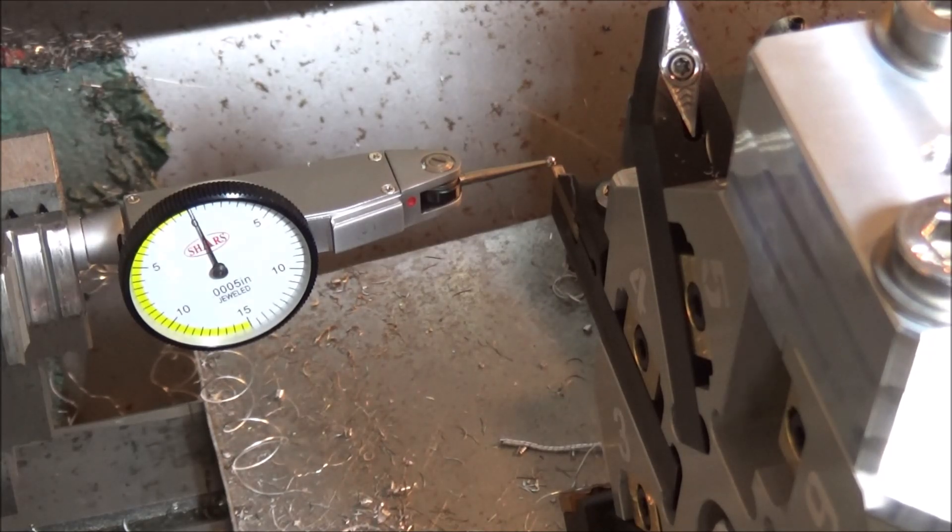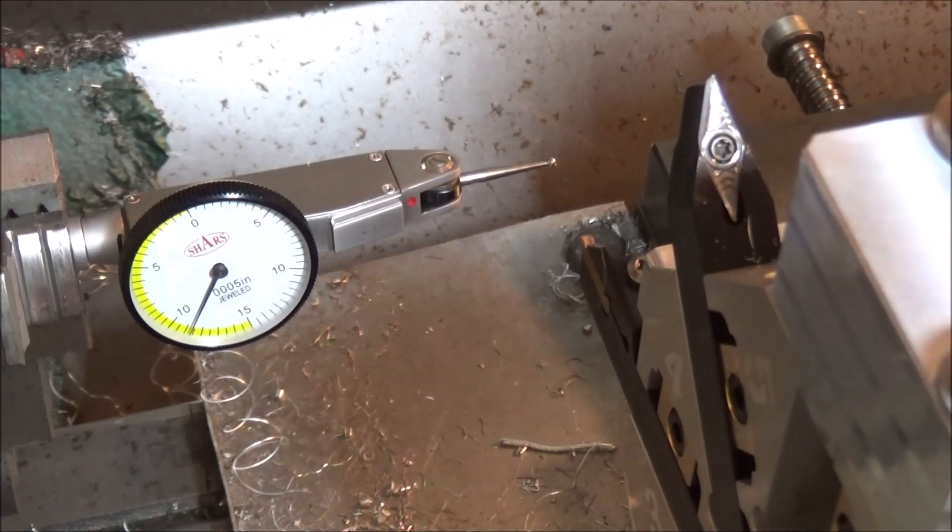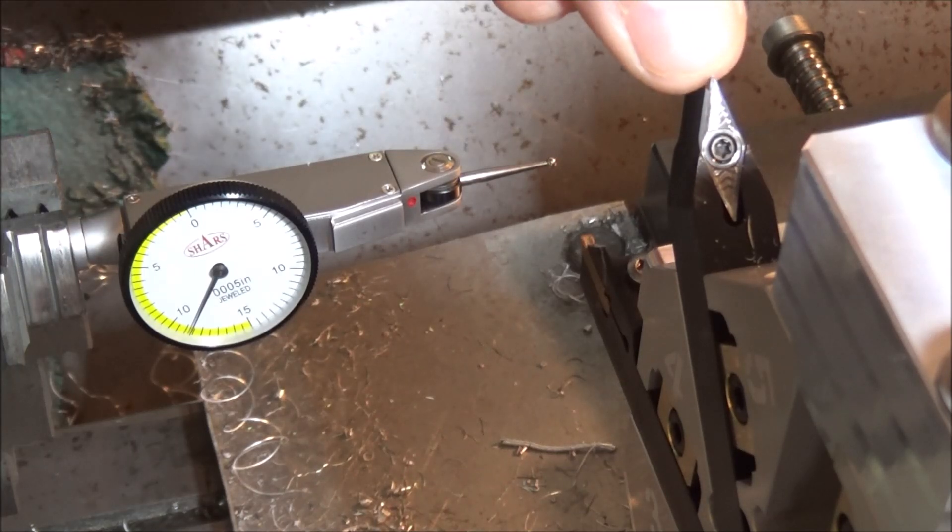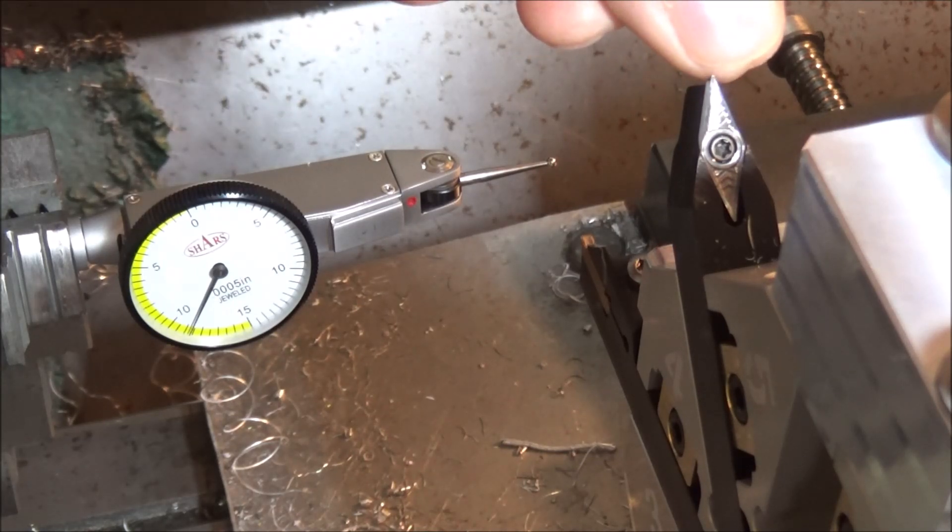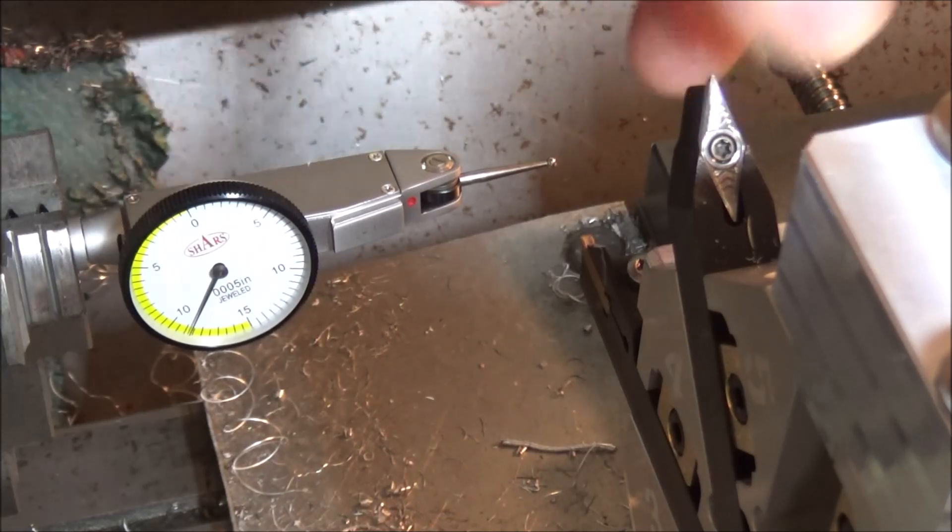But other than that, for the threading tool, because it's diamond shaped like this one, you'll just set Z zero to the tip or the center of that radius there. That usually works really well for me.